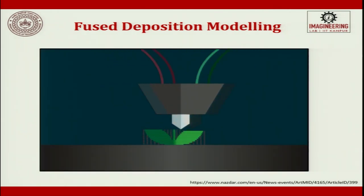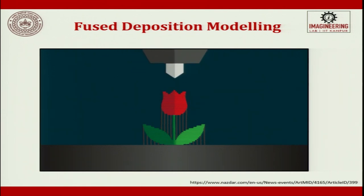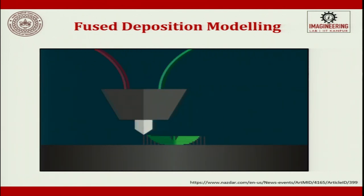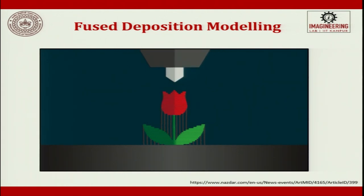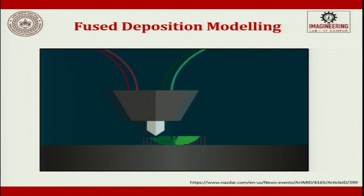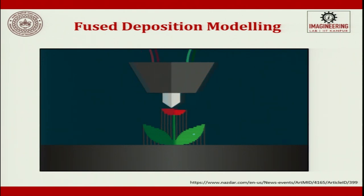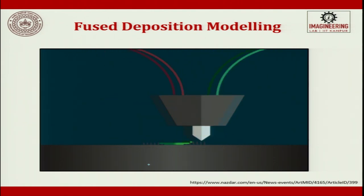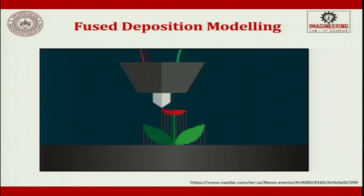In fused deposition modeling, wires are passed through a nozzle that dictates the layer thickness. Smaller layer thickness leads to better control over the result and reduces inaccuracies, but it takes considerably more time to make the product.